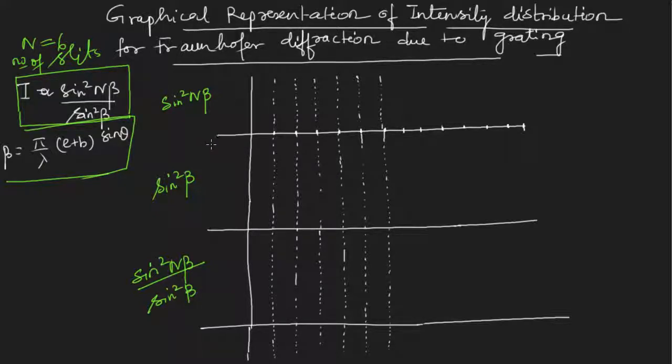Here I will take the values of n beta on the x axis and y axis will be sin square n beta. This is a normal sin curve which will look like exactly as you have seen in Young's double slit experiment. Here I take n beta equal to 0, pi, 2 pi, 3 pi, 4 pi, 5 pi and 6 pi and so on.